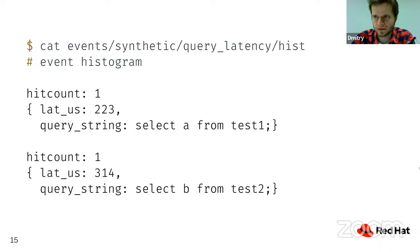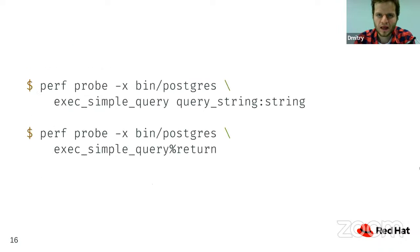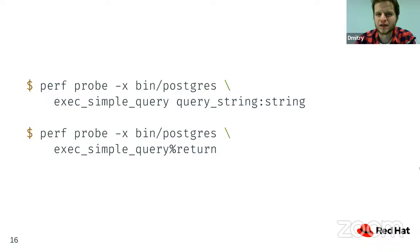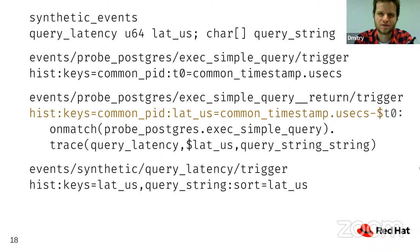You literally just configure ftrace using a virtual filesystem on Linux — no installation needed — and you can collect histograms of query latency from Postgres. This is almost like pg_stat_statements as a histogram of latencies. The first step is to create two probes: one at the beginning of query execution and one at the end, since we're measuring query latency.